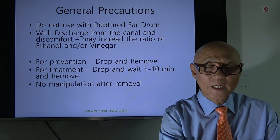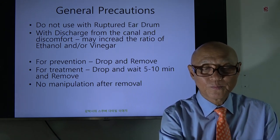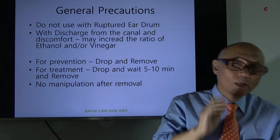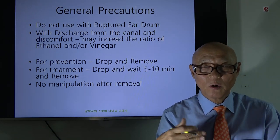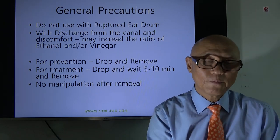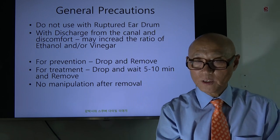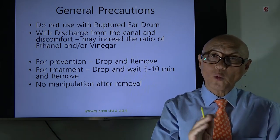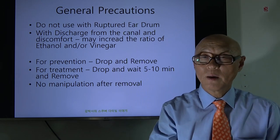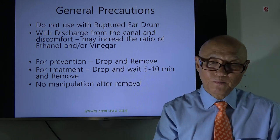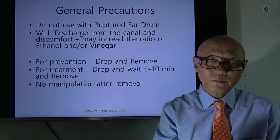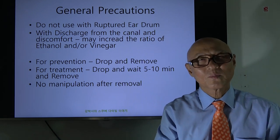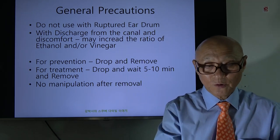When you have discharge and you begin to feel discomfort, external otitis is beginning. In that case, increase the ratio of ethanol and/or vinegar. For prevention, you can just drop the solution in and remove it immediately — you're only trying to add some acidity to your canal. But when you have the disease with pain or discomfort, put the solution in and wait a minimum of five to ten minutes, or longer. I sometimes tell patients to put the solution in, cover the ear, and go to bed, though that much is not necessary.